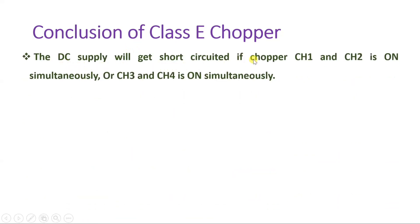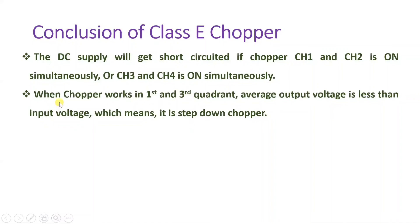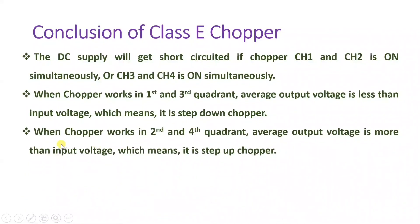Here are the conclusive points for Class E chopper. The DC supply will get short-circuited if Switch 1 and Switch 2 are turned on simultaneously, or if Switch 3 and Switch 4 are turned on simultaneously — so we must never do this. When the chopper functions in the first and third quadrants, the average output voltage is less than input voltage, so it acts as a step-down chopper. When the chopper works in the second and fourth quadrants, the average output voltage is more than input voltage, so it acts as a step-up chopper.